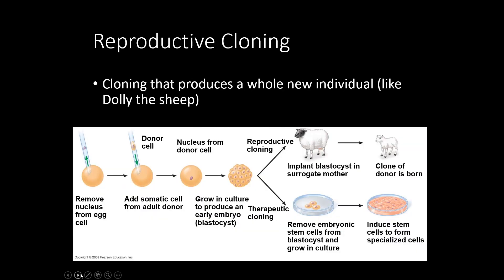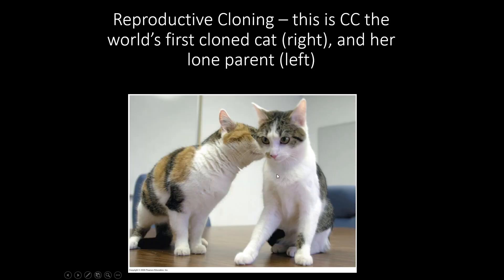Reproductive cloning is what they did with Dolly — whenever you make a reproductive clone, you make a clone of a whole organism. It is currently illegal in almost all countries to clone human beings, but you can clone a horse, cow, cat, or dog if you have enough money. This cloned cat doesn't look exactly the same as the original because they're not expressing their genes the same way — fur color on the X chromosome is randomly determined in each cell. Since it's a randomized process, even an exact genetic copy won't look the same because it doesn't express those genes the same way.